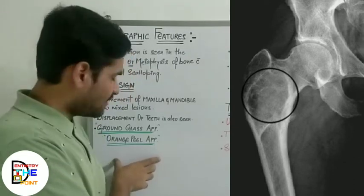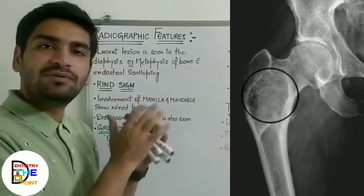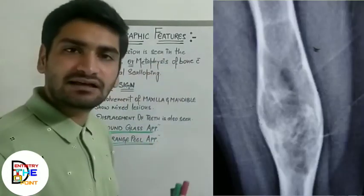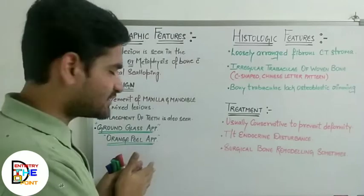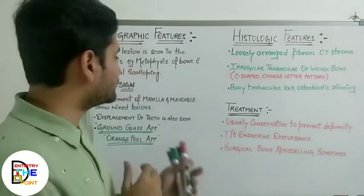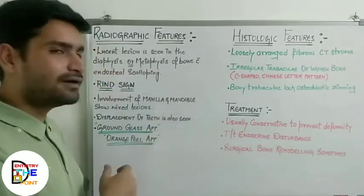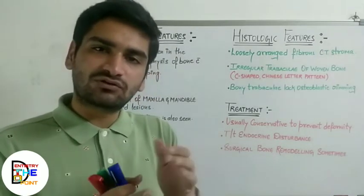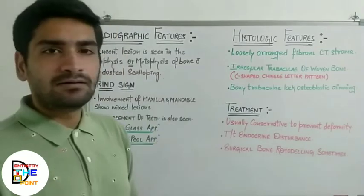This radiolucent appearance is characterized as 'ground glass appearance,' also called orange peel appearance. Any radiolucency seen will be a bit hazy, and that type of radiolucency is characterized as ground glass or orange peel appearance. This is an MCQ question — radiographically, fibrous dysplasia shows ground glass or orange peel appearance. There is also involvement of maxilla and mandible, with possible displacement of teeth and expansion of cortical plates of the bone.